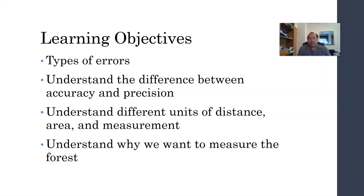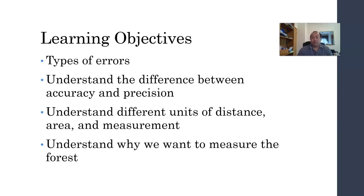Our learning objectives for today: we're going to talk about different types of errors that we might make, understand the difference between accuracy and precision because they're not the same thing, understand different units of distance, area, and measurement, and understand why all of that is necessary for forestry and why we want to know that stuff for measuring the forest.